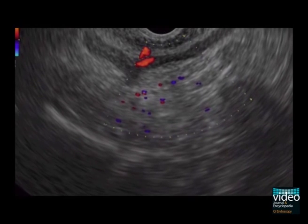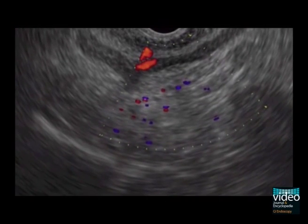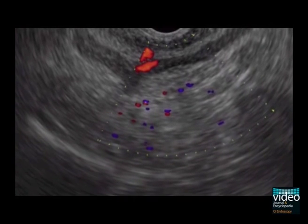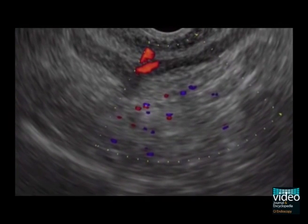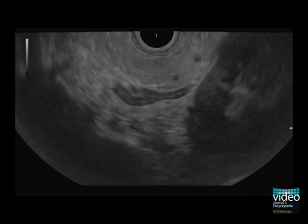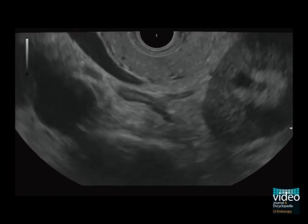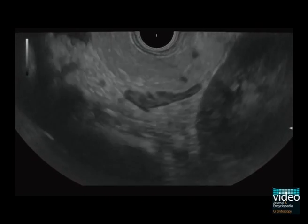In this longitudinal scan, the cranial part is located in the right of the picture. The left adrenal gland can be seen approximately 45 cm from the teeth. The gland is surrounded by the upper pole of the spleen, the upper pole of the kidney, and by the left crus of the diaphragm.